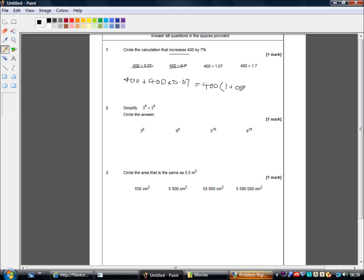What's wrong with me? That decimal point should have gone there. Okay. So that's 400 times 1.07. So this is the correct answer. And this answer here would have increased 400 by 70%. So that's not the correct answer.